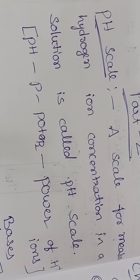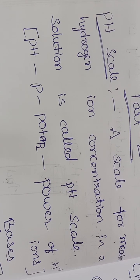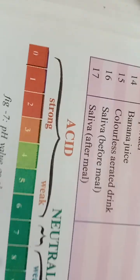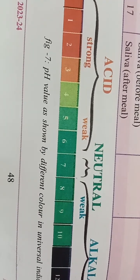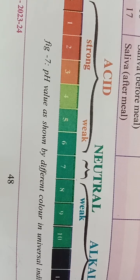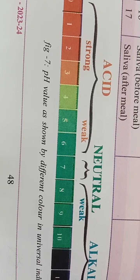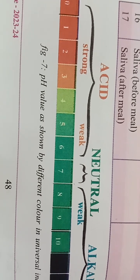On page number 48 of your textbook you will find the universal pH scale. Whenever you insert this pH paper into any solution, based on the color you can recognize the nature of the solution - how strong or weak it is.